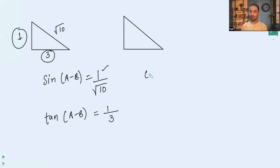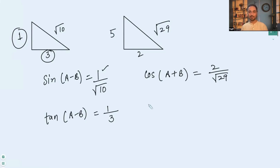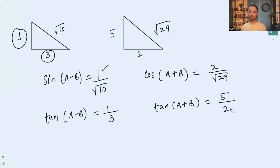Similarly, we are given cos(a + b) = 2/√29. Since cos is adjacent over hypotenuse, the adjacent side is 2 and the hypotenuse is √29. Using Pythagoras, the missing (opposite) side is 5. Therefore tan(a + b) = opposite / adjacent = 5/2.